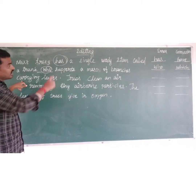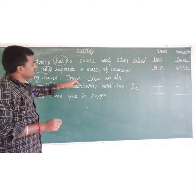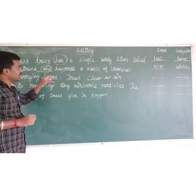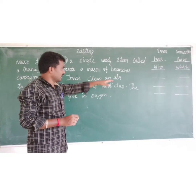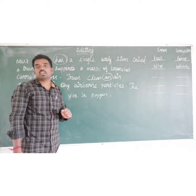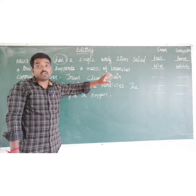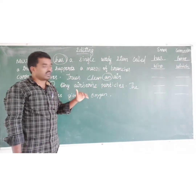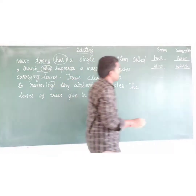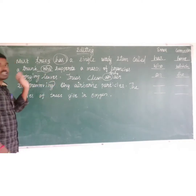Next, the third line: 'Trees clean and air.' Trees are purifying the air — it is one particular thing. For a particular thing we want to use 'the', not 'and'. So the error is 'and' and the correction is 'the'. Third line over.